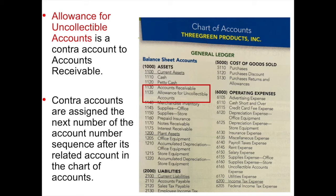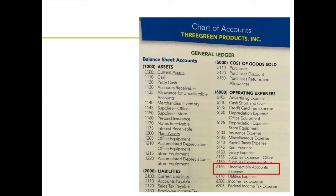Your accounts receivable has a normal debit balance. Since allowance for uncollectible accounts is a contra account to accounts receivable, it will have a credit balance. The other account affected is uncollectible accounts expense, which is an expense and therefore falls under the expense classification.